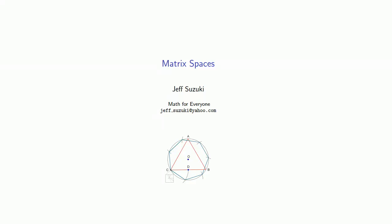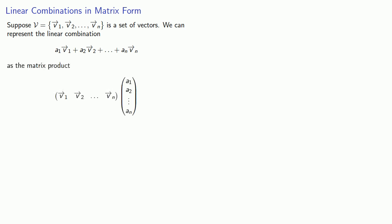Let's talk about matrix spaces. Suppose I have some set of vectors. We can represent the linear combination as a matrix product, where here we would apparently multiply this row of vectors by this column of coefficients.